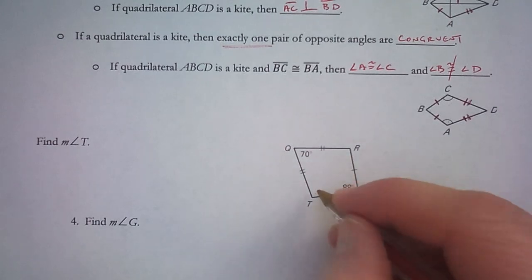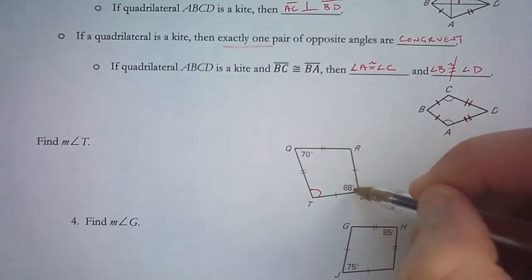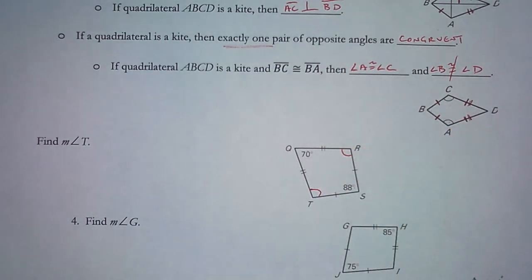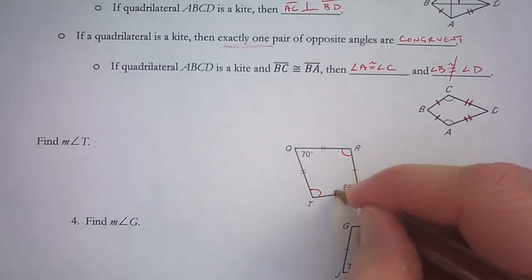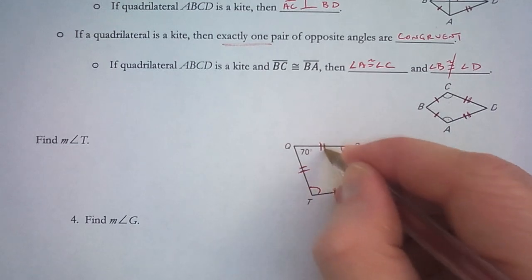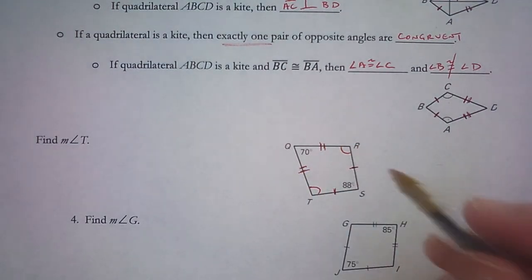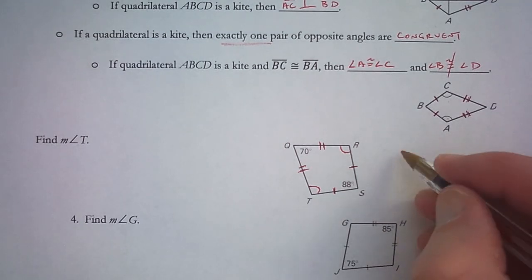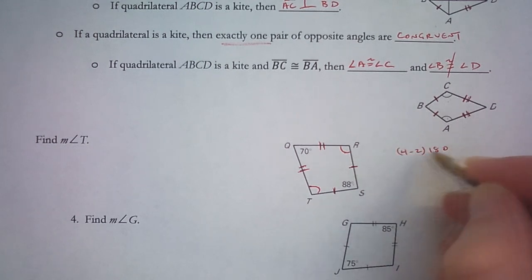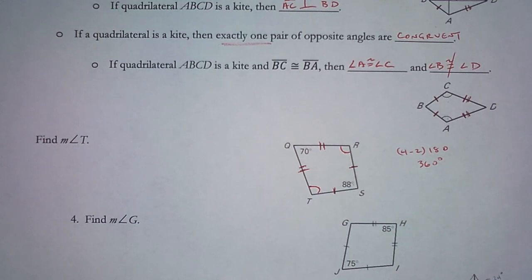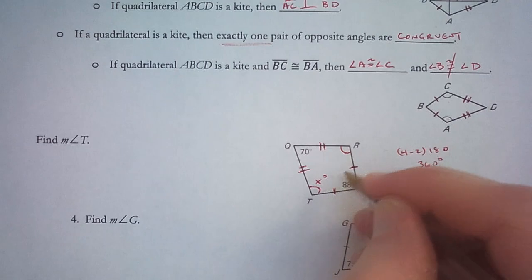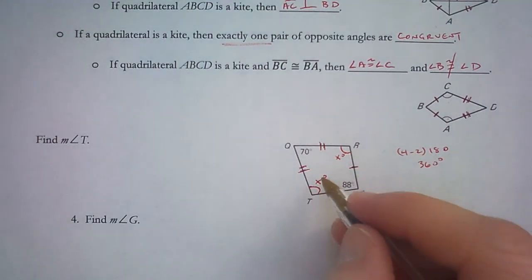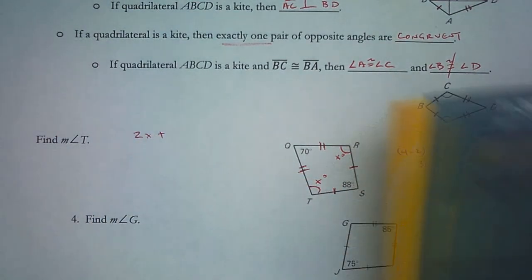So here we're going to find the measure of angle T. We have 70 and 80 degrees. Angles Q and S are not congruent, which means that T and R will have to be congruent because it is a kite — one pair of congruent sides here and a different pair of congruent sides here. As a quadrilateral, it has a total of 360 degrees. I can call angle T as x degrees, and angle R is also x degrees. So I have two x's plus 70 and 88.